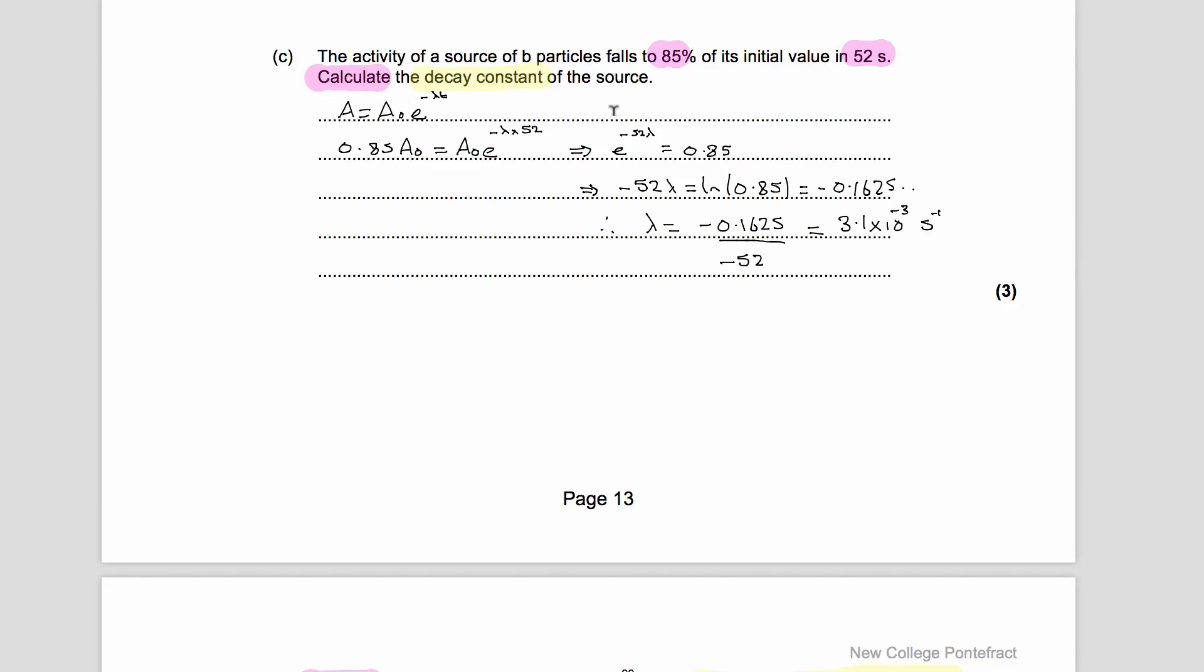We're told that in 52 seconds, this source of radiation falls to 85 percent of its value. So the starting value is A₀, so 85 percent of the A₀ is 0.85 A₀, so that's our 85 percent of the starting rate. That's equal to the starting rate multiplied by e to the minus lambda, which is what we want to find out, multiplied by 52 because that was the time. If we rearrange this, we get e to the minus 52 lambda is 0.85. Take natural logs of both sides, gives us this equation here, and then in the end, so minus 52 lambda is equal to minus 0.1625, so lambda is equal to that number divided by minus 52, so lambda is equal to 3.1 times 10 to the minus 3 per second.